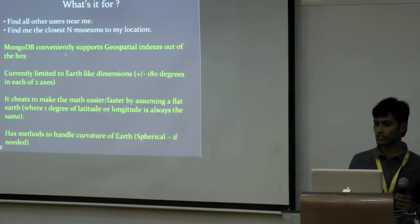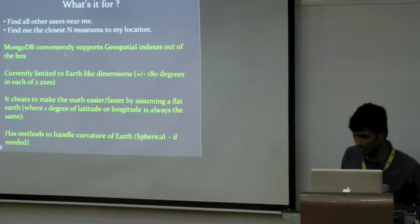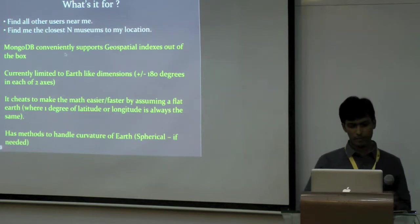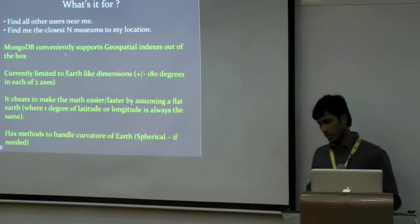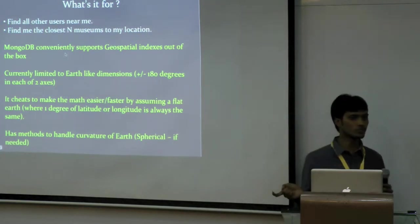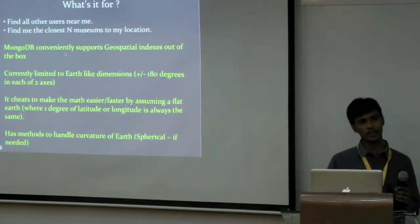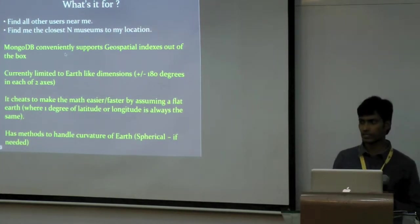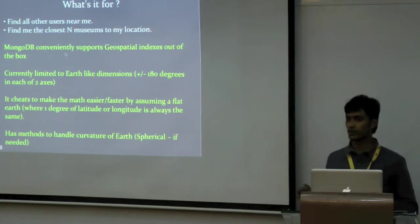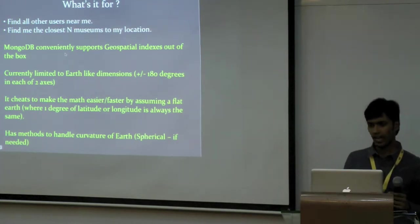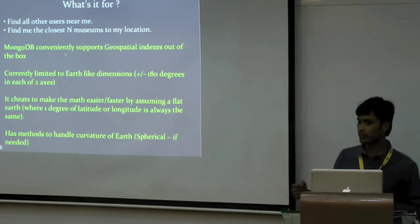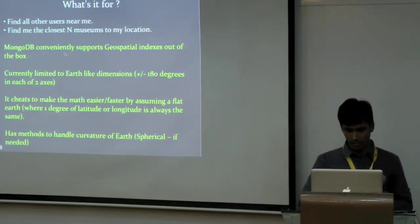So, MongoDB basically supports geospatial indexes out of the box. Right now, it's currently linked to only ethnic dimensions, where there's desk minus 180 in each access. To make the map easier and to make it very faster, it assumes that the Earth is flat. What do you mean by Earth is flat? It basically assumes that one degree of latitude and one degree of longitude is the same distance. That is not a problem for most of the location-based applications, unless you are very concerned about small distances. And it has methods to handle the coverage of it, where it can consider the Earth is spherical, but the performance can be a bit less.